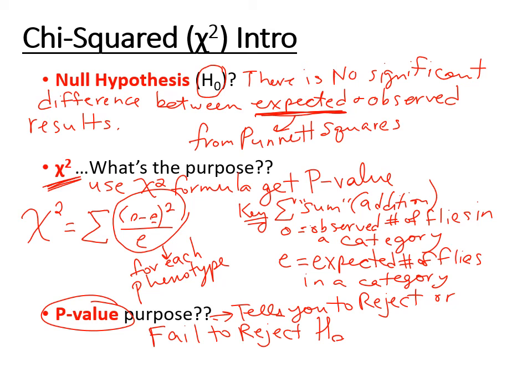Before we move on to the examples, one more point: when you see O minus E on top of that fraction, sometimes you'll hear this called deviation. I won't refer to it that way, but just in case you're reading a textbook — deviation because you're basically seeing how much did I deviate in my observed phenotypes or observed offspring from what I was expecting. If any of the terms on this slide are causing trouble, just send me a message and I will help you out.